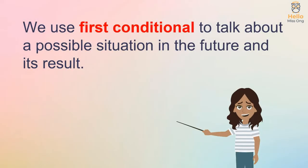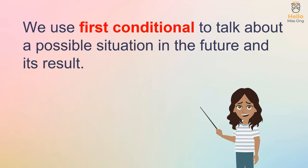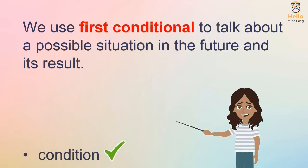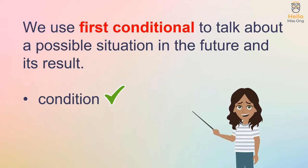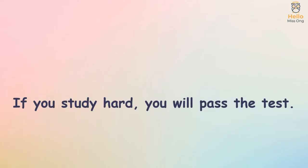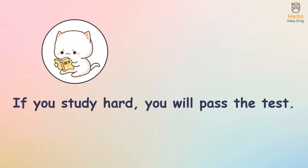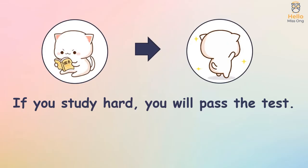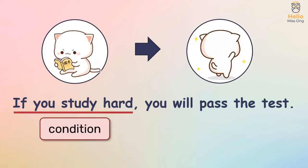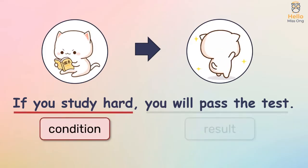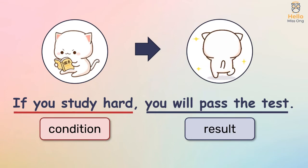We use the first conditional to talk about a possible situation in the future and its result. This means that if a certain condition is met, the result will probably happen. For example, if you study hard, you will pass the test. In this sentence, studying hard is the condition, while passing the test is the possible result of studying hard.